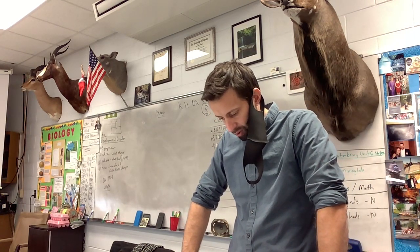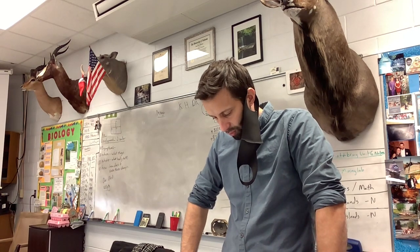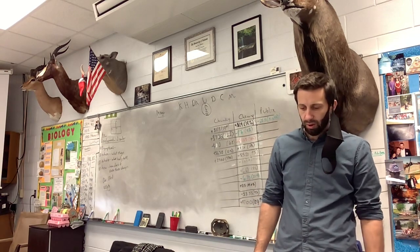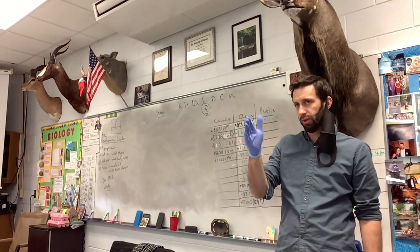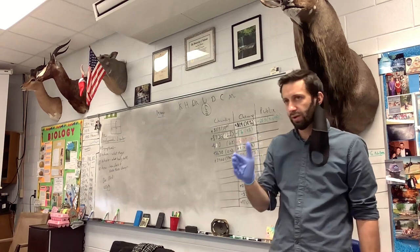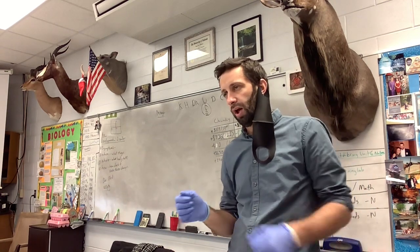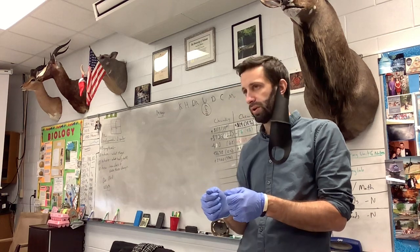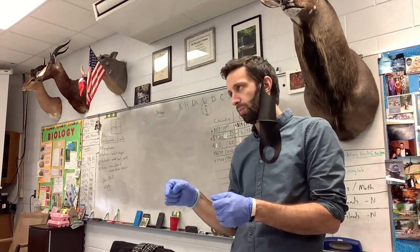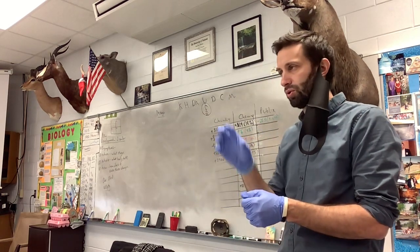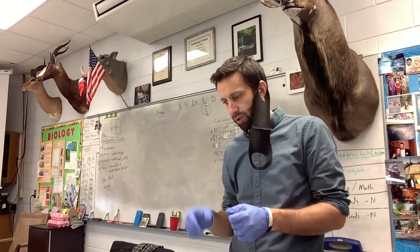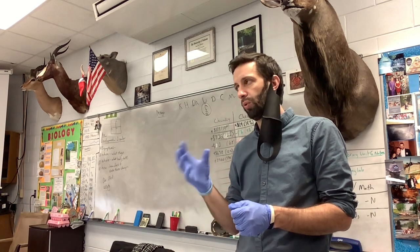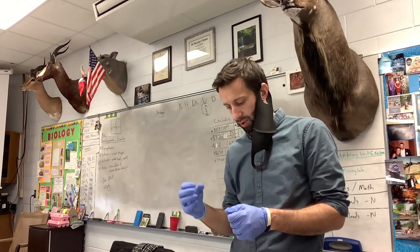Number four — weigh your cookie using a digital scale. Record this weight beside number four. You don't need to put it on the ledger sheet. There are plenty of balances for you guys to use — just turn it on. I would put a little piece of paper towel on top of it, hit the tare button which just zeroes it out, and then put your cookie on there and write down the weight. We're going to use that later on to figure out what percentage of coal was in your mine.